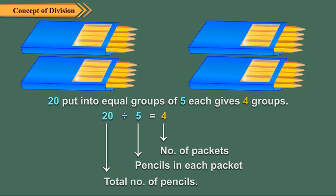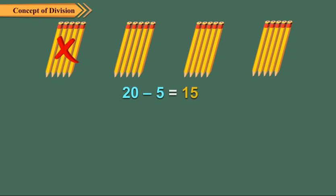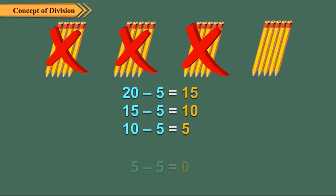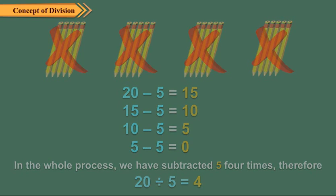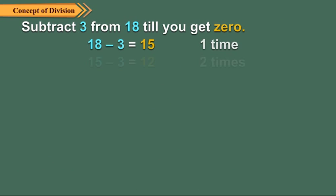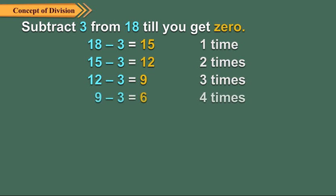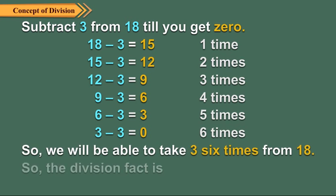Children, equal grouping can also be shown as repeated subtraction. In the above example, we can also divide 20 pencils in five packets by repeated subtraction. Let us now take another example. How many times will you be able to take away 3 from 18?